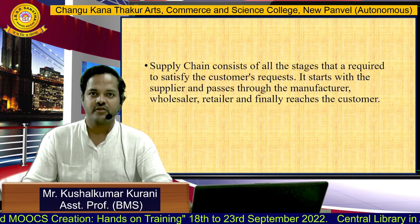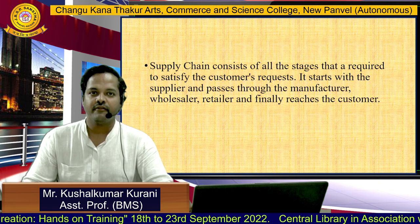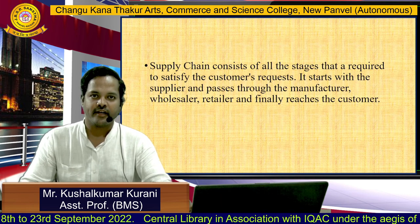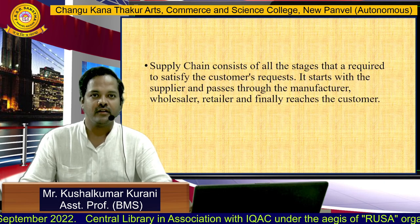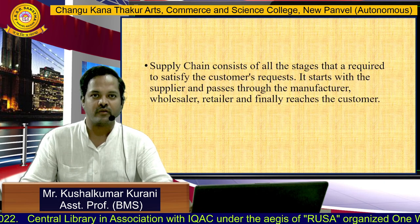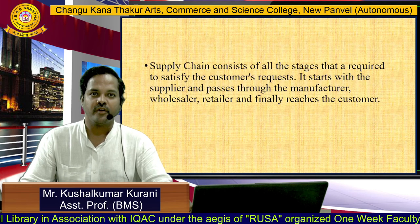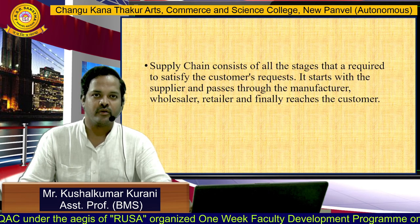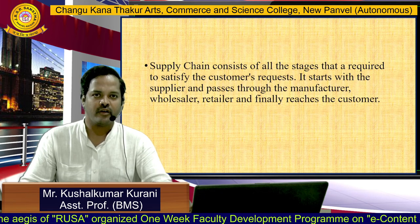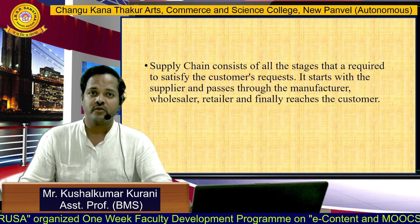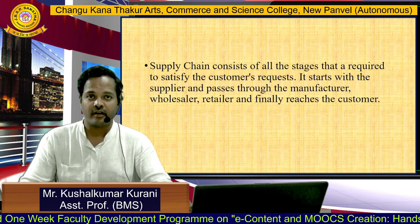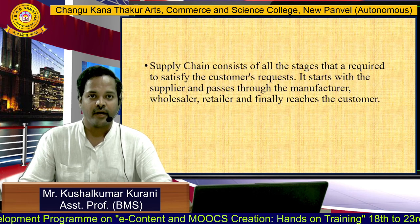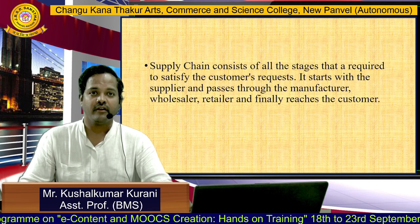It starts with the supplier and passes through the manufacturer, wholesaler, retailer and finally reaches the customer. Today the market is completely digital or online — sitting at one place, you can order anything and everything, starting from furniture, electronics, food, vegetables. For instance, Amazon, Flipkart, BigBasket, Uber, Ola — everything is online. We don't know what is happening at the back end, who is actually providing these goods. There is a big chain starting from manufacturer, then retailer, and finally the customer.